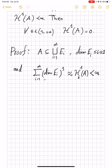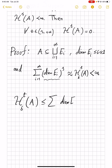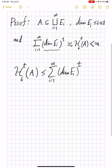Now you have very tiny values raised to power s, and their summation is finite. So what happens if we try to estimate H^t_delta? Since the E_i's form a delta-covering, we can use them in the estimation of H^t_delta. Therefore, this will be the sum of diameter(E_i) to power t, from i going 1 to infinity.